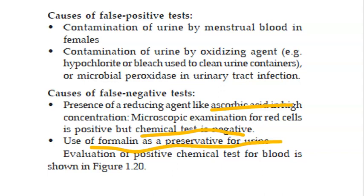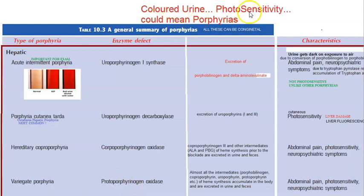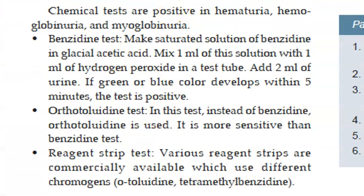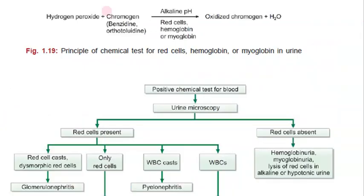When formalin is used as a preservative, it will cause issues - examine urine immediately, don't try to preserve it. Urine color change after exposure to sunlight can also cause a false result, such as in porphyria. The chemical tests to look for hematuria are: the benzidine test, the orthotolidine test, and reagent strip test. Orthotolidine is preferred as it is more sensitive than benzidine. The principle is: a chromogen reacts with hydrogen peroxide, giving oxidized chromogen and water.